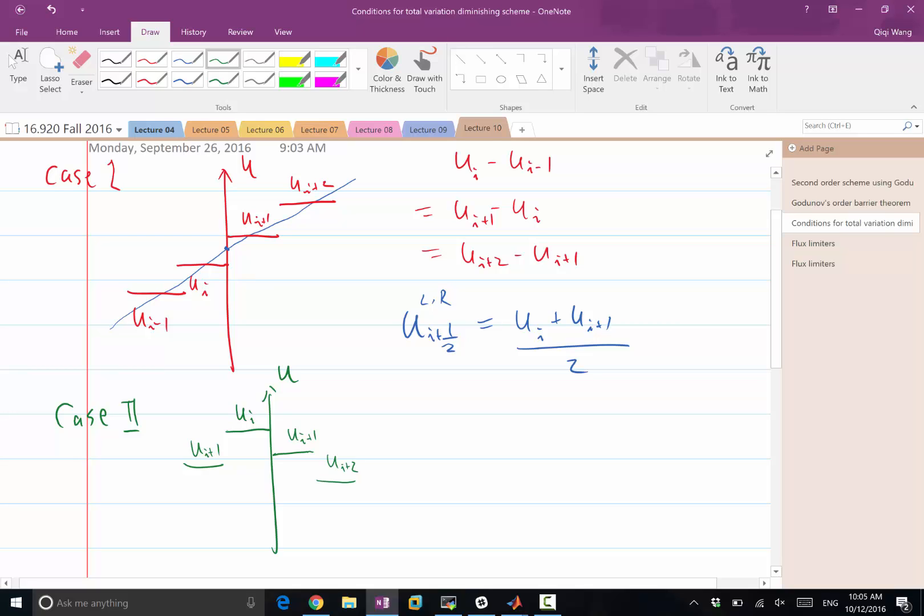When this is a local maximum, can somebody tell me what should the value of ui plus half left? What is the constraint on this value? Can the value be higher than ui itself? If we want to preserve monotonicity of the total variation? Remember, the monotonicity of total variation is not creating new extremers. If you create a new extremer, if you push the maximum, if you push the local maximum of the function above ui, which is the current local maximum, we are increasing the total variation, right?